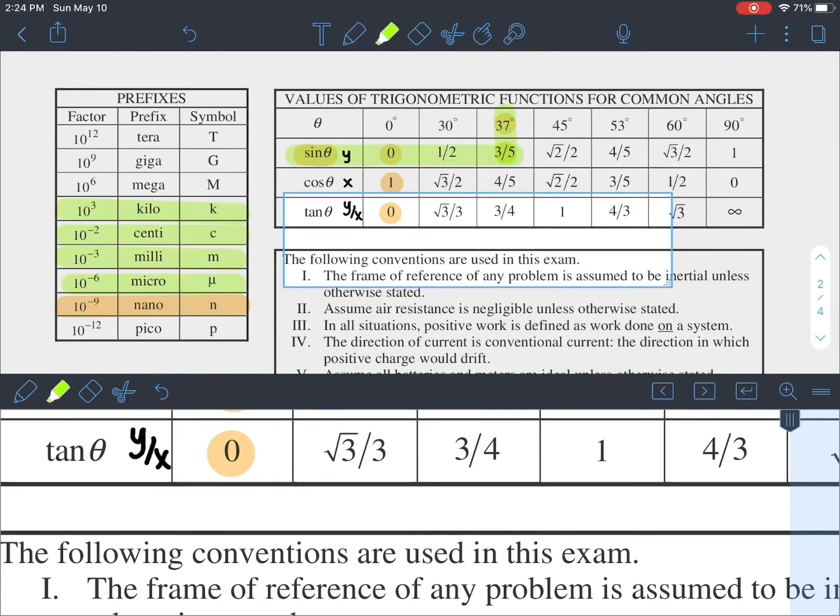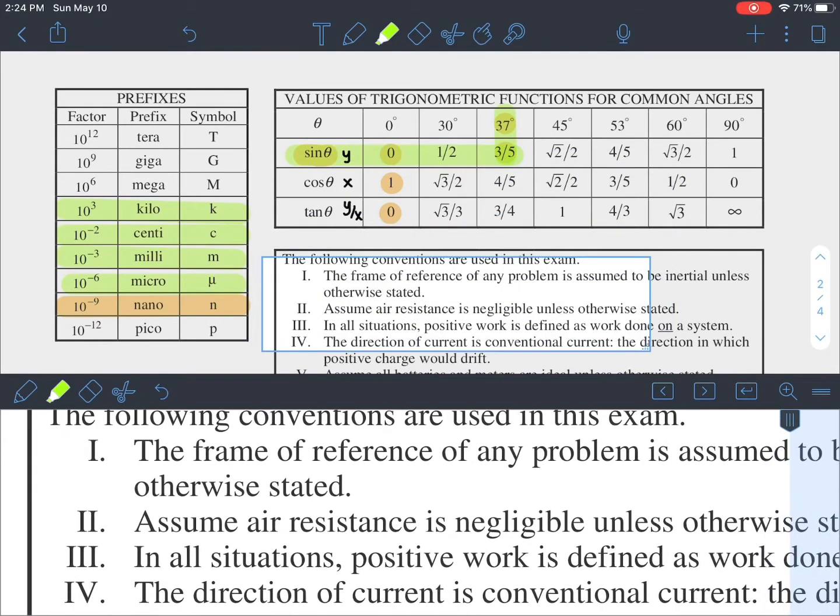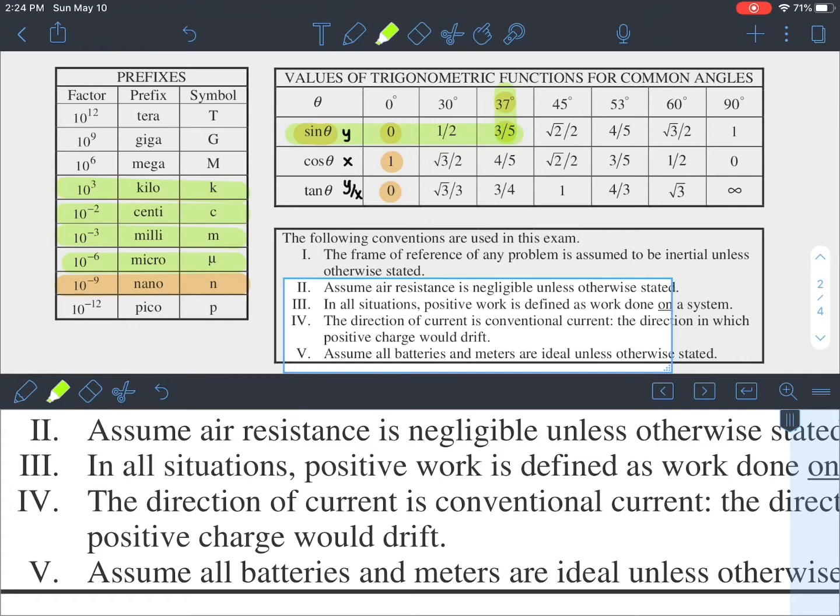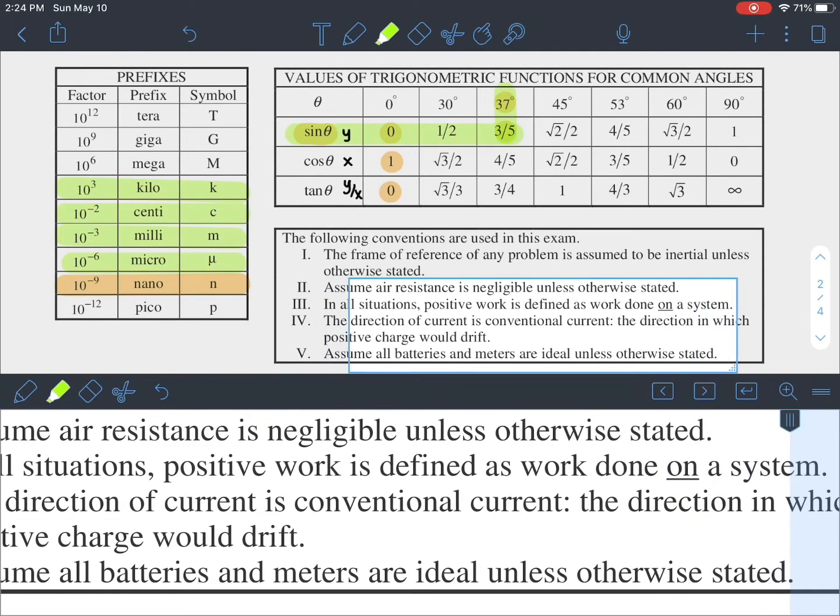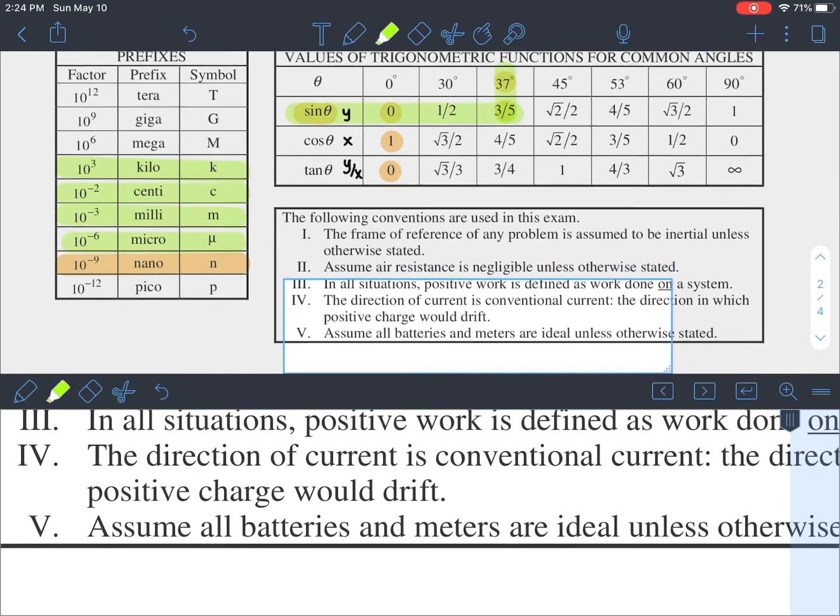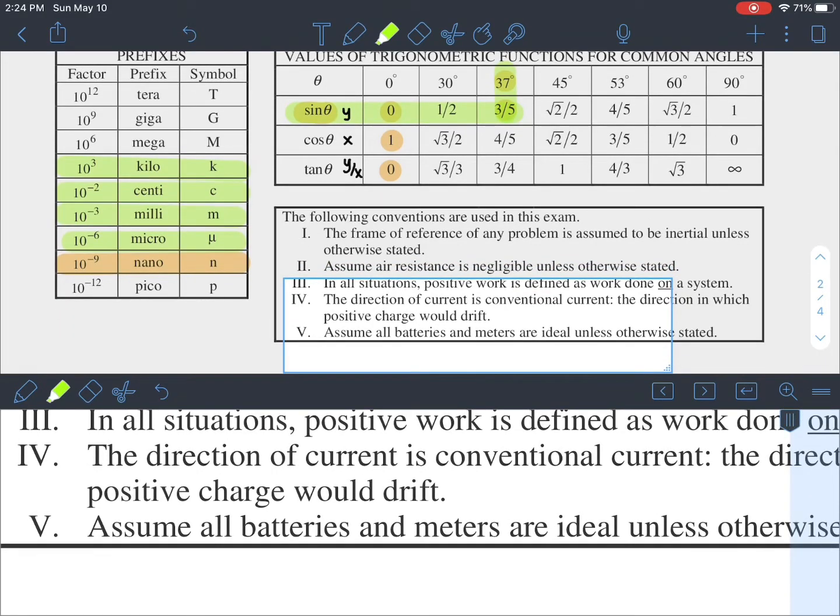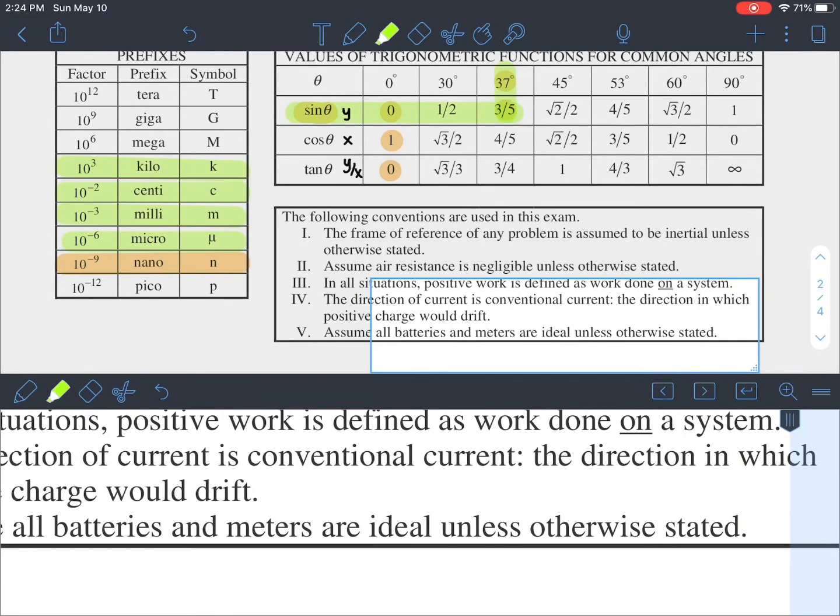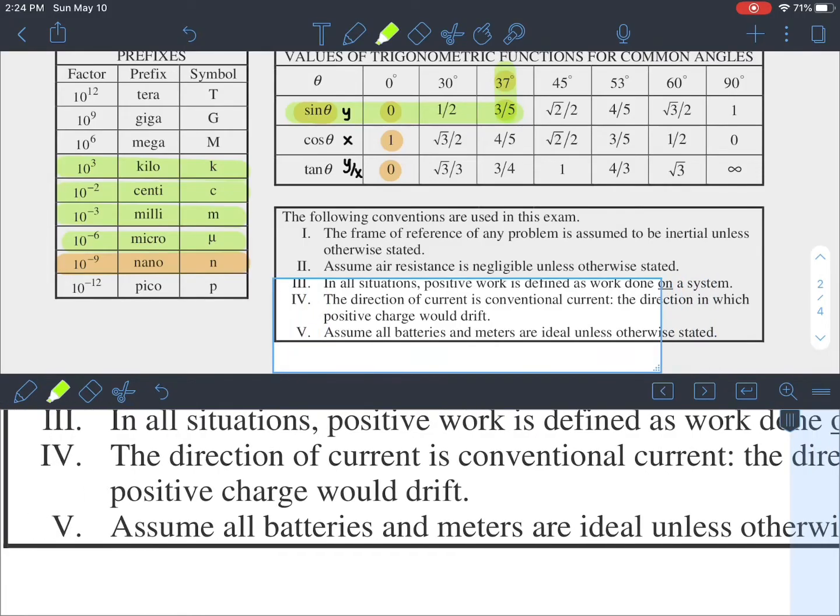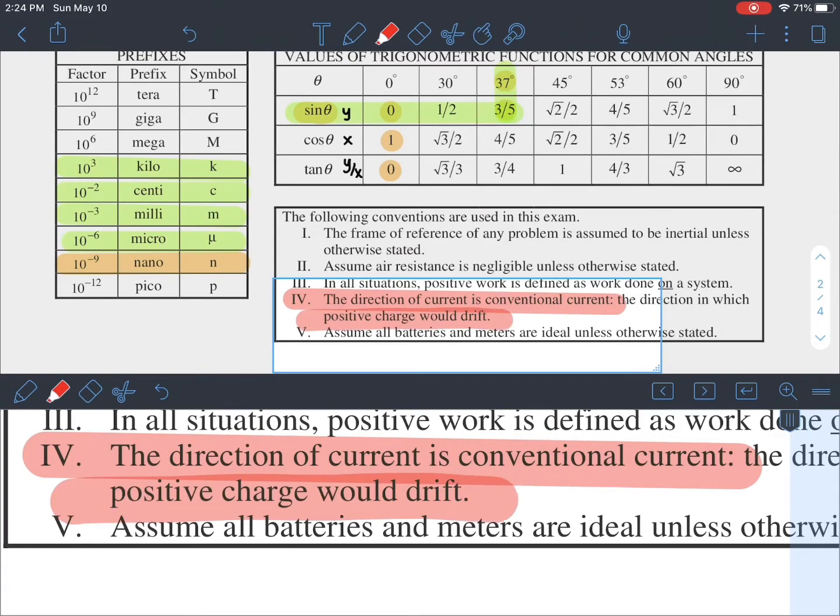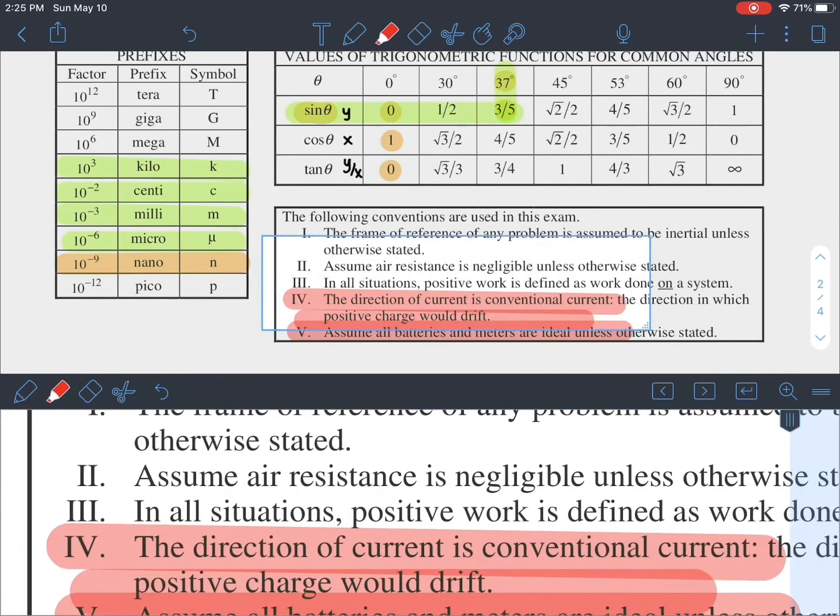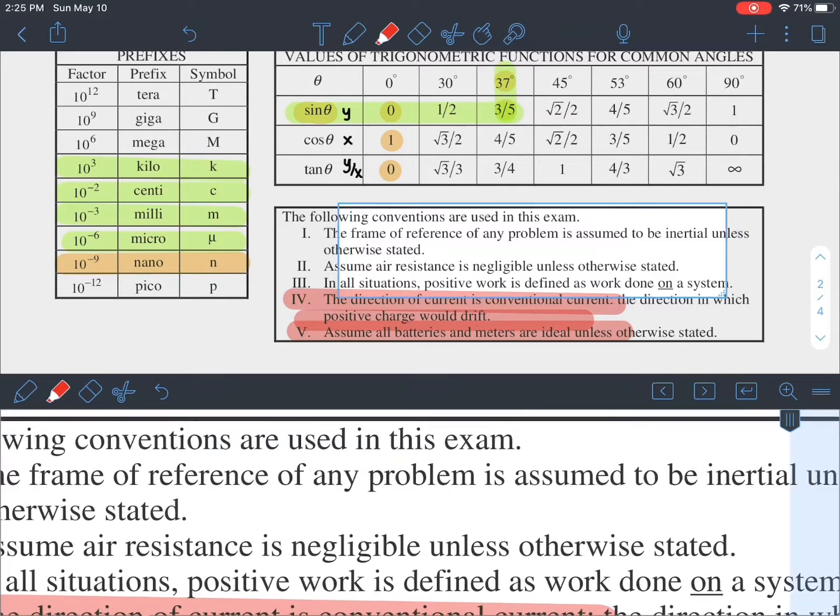The final thing on this page is conventions that are used in this exam. At this level, the frame of reference of any problem is assumed to be inertial, unless otherwise stated. We assume air resistance is negligible, unless otherwise stated. And in all situations, positive work is defined as work done on a system. We won't need the final two points for this exam because they are about electricity and magnetism.